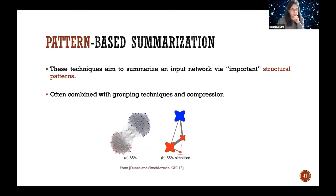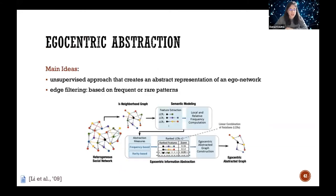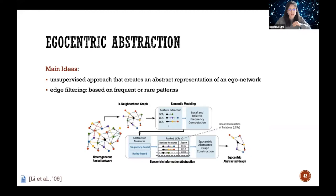Pattern-based summarization aims to summarize an input network via important structural patterns. These techniques often combine grouping and compression. One example summarizes the graph with frequent or rare path-based patterns in K-neighborhood graphs — it looks into each K-neighborhood of a node, extracts paths, counts their frequency, and depending on whether the representation is to be frequent or rare, keeps those paths and ends up with an egocentric abstracted graph.